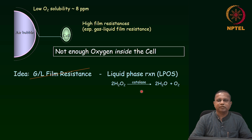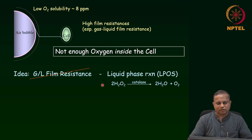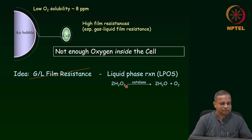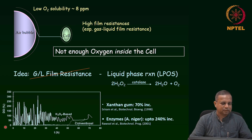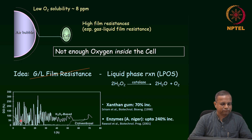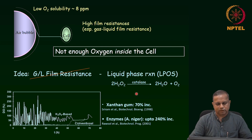The liquid-phase reaction was the catalytic decomposition of hydrogen peroxide. Added hydrogen peroxide decomposes to water and oxygen — clean, green products — and all aerobes are known to have catalase. When we looked at xanthan gum cultivation, the conventional cultivation took the dissolved oxygen (DO) to zero in about six and a half hours, whereas the liquid phase oxygen supply (LPOS) maintained DO above the set point of 50 percent throughout the fermentation. This resulted in better yields — a 70 percent increase in the volumetric productivity of xanthan gum.